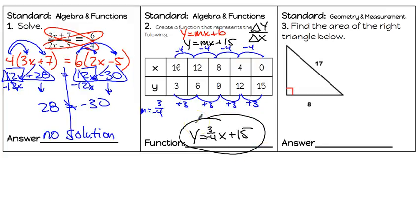Number 3: find the area of the right triangle below. The formula to find the area of a triangle is base times height divided by 2. We have the base, we need to find the height. It's a right triangle, so we can use the Pythagorean theorem: A squared plus B squared equals C squared.